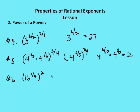For 16 to the 1 fourth taken to the second power: multiply 2 over 1 times 1 over 4 to get 2 over 4, which is the same as 1 half. So 16 to the 1 half is the same as the square root of 16, and that is equal to 4.